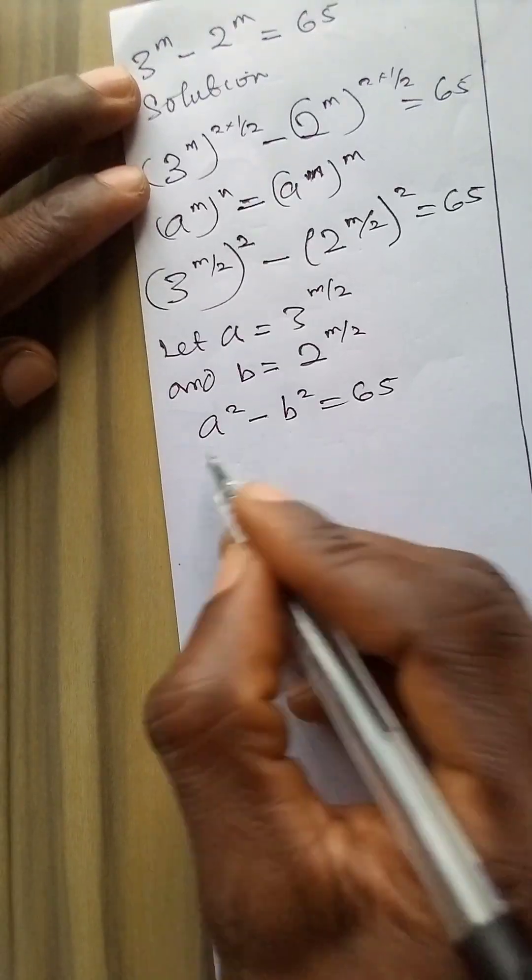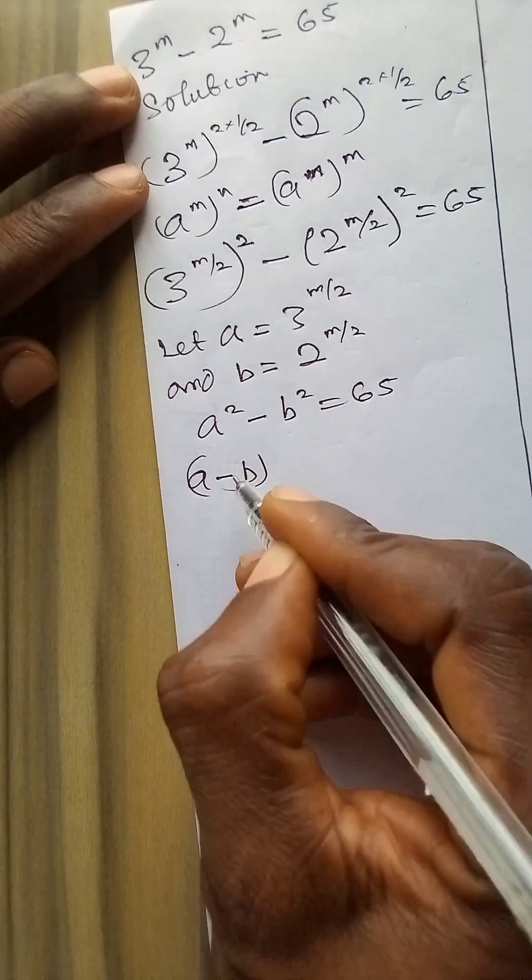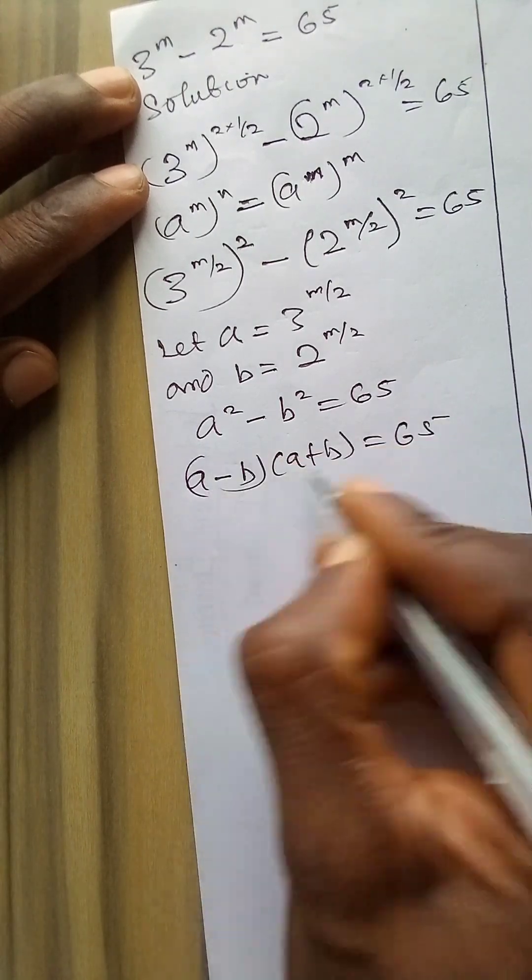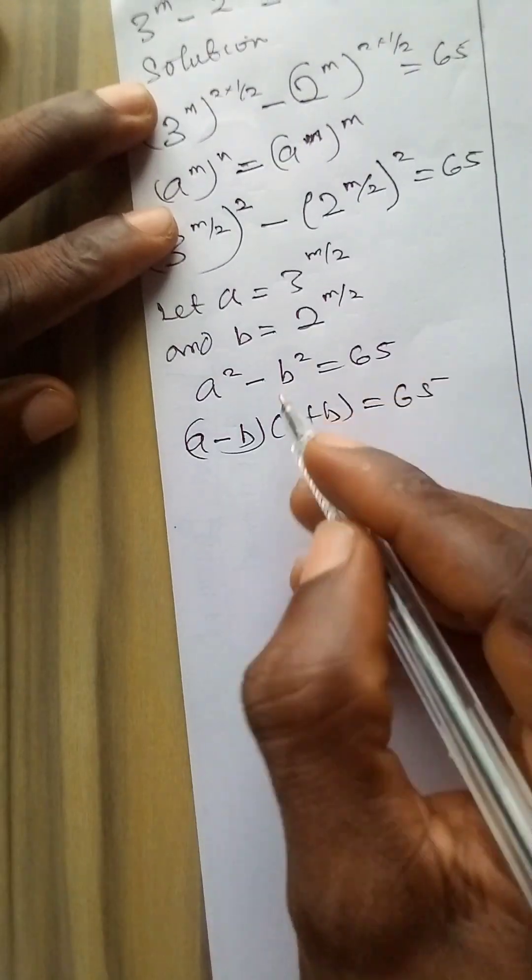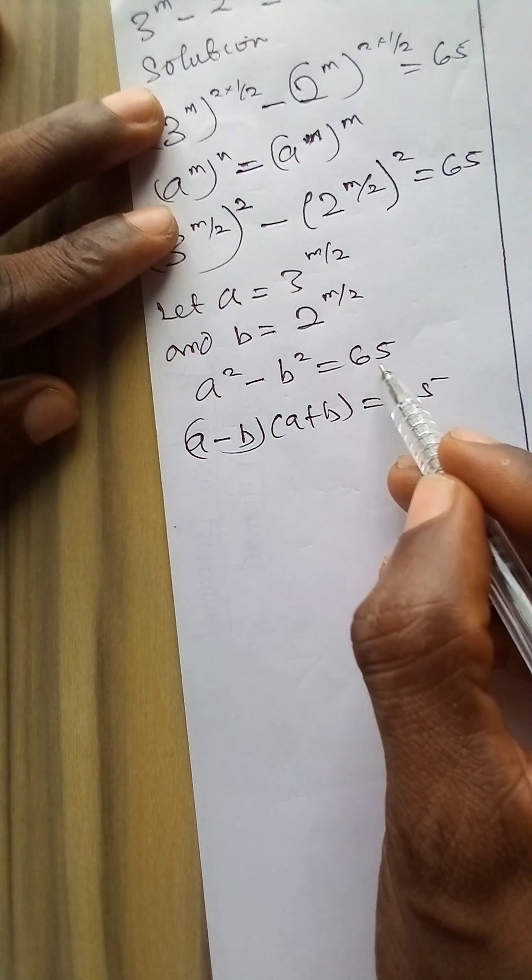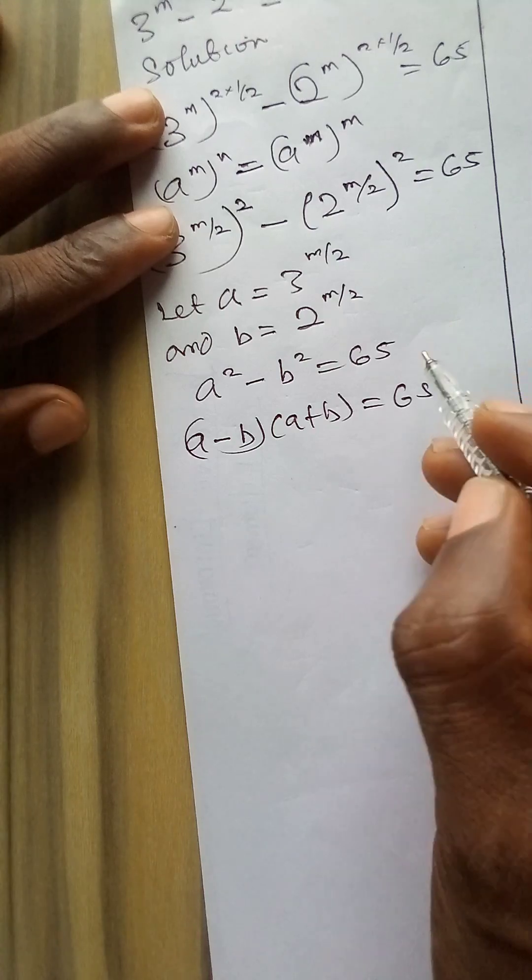Now let's remember that this is difference of 2 squares. a minus b in the bracket and a plus b in another bracket will give me 65. If I open this bracket I will have this term on the right hand side. Now this is difference of 2 squares and the result is an odd number. So I have to express 65 as product of two odd numbers.